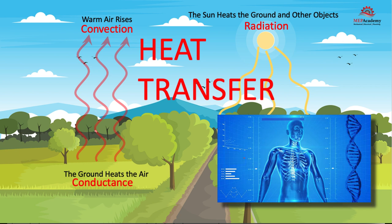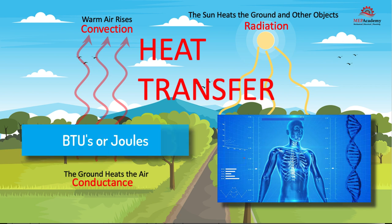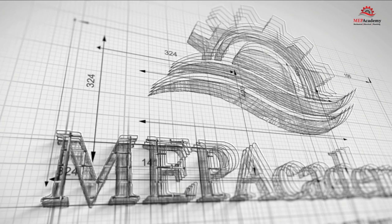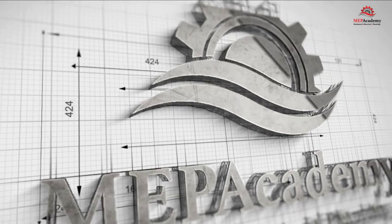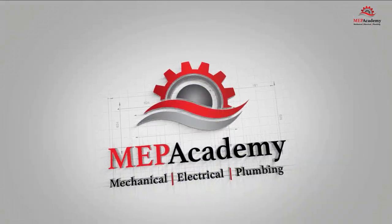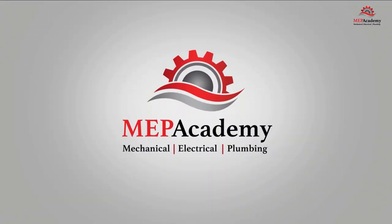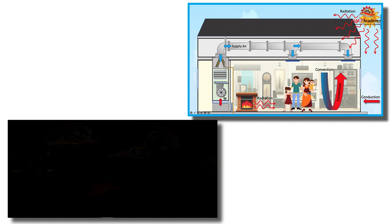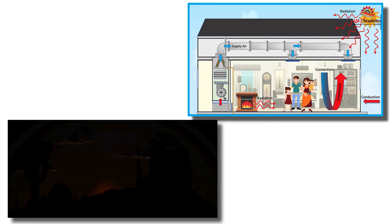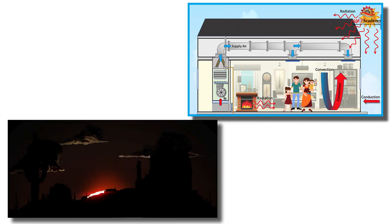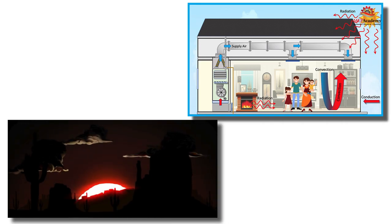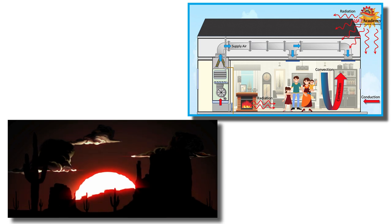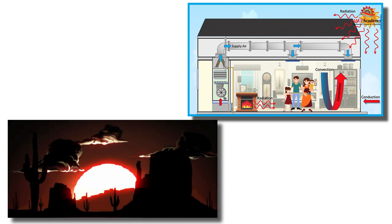The heat is measured in BTUs or Joules. According to the second law of thermodynamics, heat moves from a warmer object to a cooler one. This is how heat uses any of the three methods to move from the outdoors to the indoor environment or to and from our bodies.